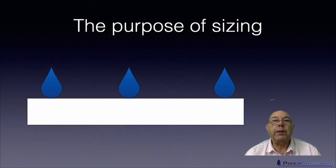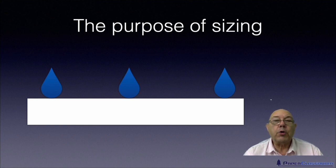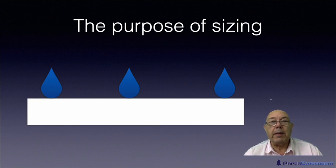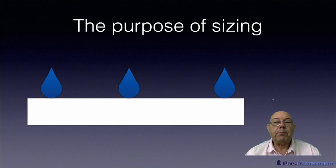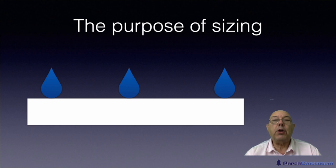Let's start off with the purpose of sizing. Sizing is a very strange word to most people out there in the real world — it normally means measuring the length and width and maybe the height and volume of things. But for papermakers, sizing means making a sheet water repellent, or at least preventing the penetration of water into the surface of the sheet.